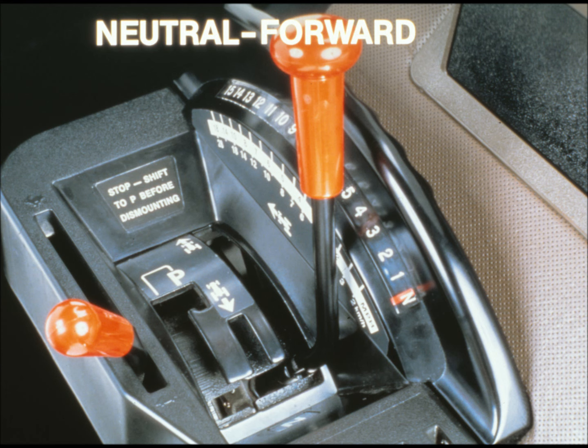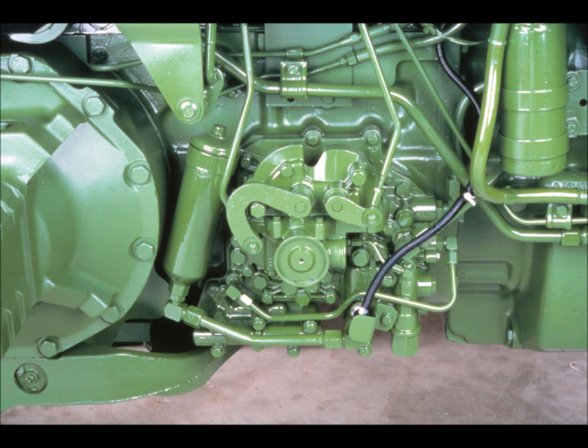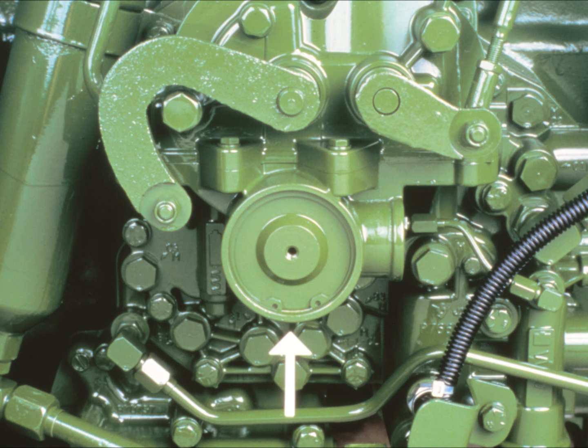Now, with those preliminary details out of the way, we can start to look at the actual components in the control circuit. This is the transmission control valve housing, located on the right side of the transmission case. It contains most of the control circuit components. The rest of the components are bolted to the inside of the housing or are in the transmission case. As we go through the components, keep an eye on this cylinder — it will serve as a reference point to help you identify the location of different valves in the housing.